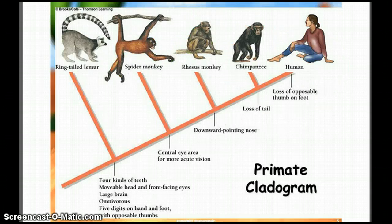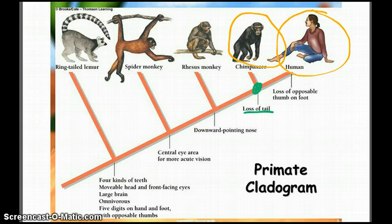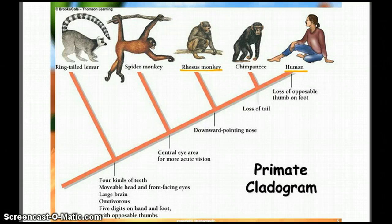If we look at this primate cladogram, we can then explain that humans and chimpanzees share a tailless common ancestor right here. And that we are less closely related to the rhesus monkey, since the downward pointing nose ancestor we share is way down here.